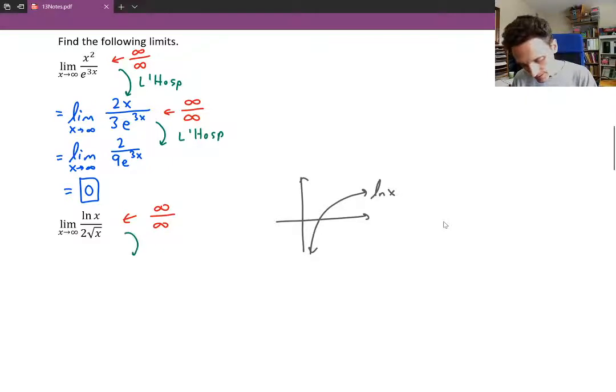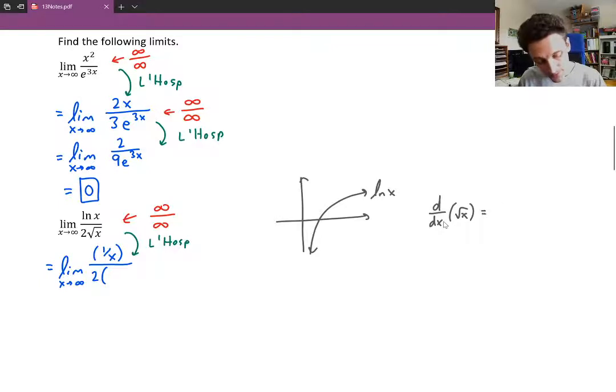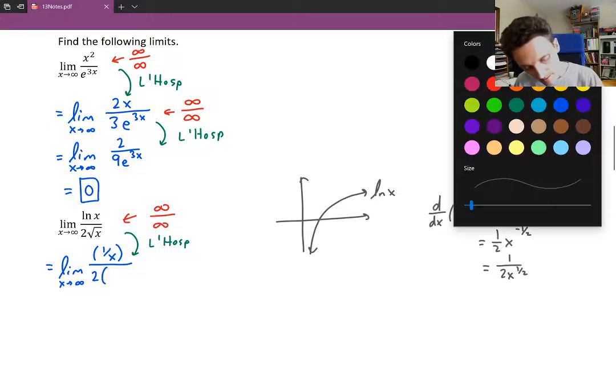Now this means we can use L'Hopital. So we'll take the derivative of ln x on top and you get 1 over x for that. Take the derivative of the square root of x. Now the square root of x, we've done this in some previous videos but one more time here. If you want to take the derivative of the square root of x, you can rewrite that as a half power. Multiply the half in front. Subtract 1 from the exponent and then bring this down to the bottom of the fraction as x to the half.